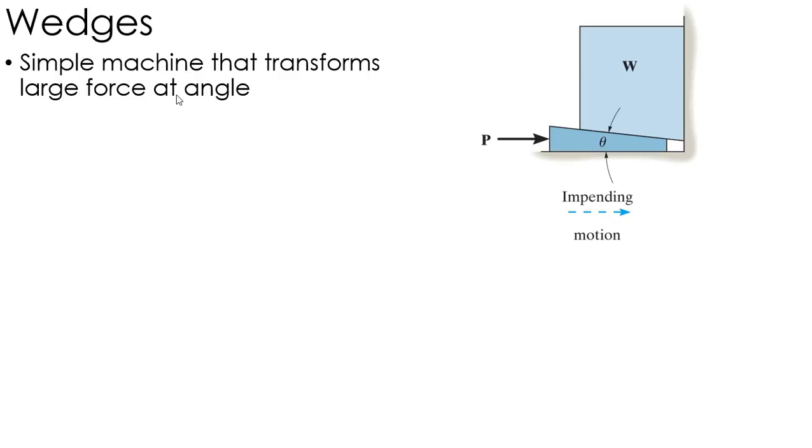Okay, in this lecture we're going to look at a couple applications of the friction we just previously talked about. The first one that we're going to look at is a wedge. And what a wedge is, is basically a machine, and what it does is it transforms a small force into a large force and kind of turns an angle, generally a right angle.